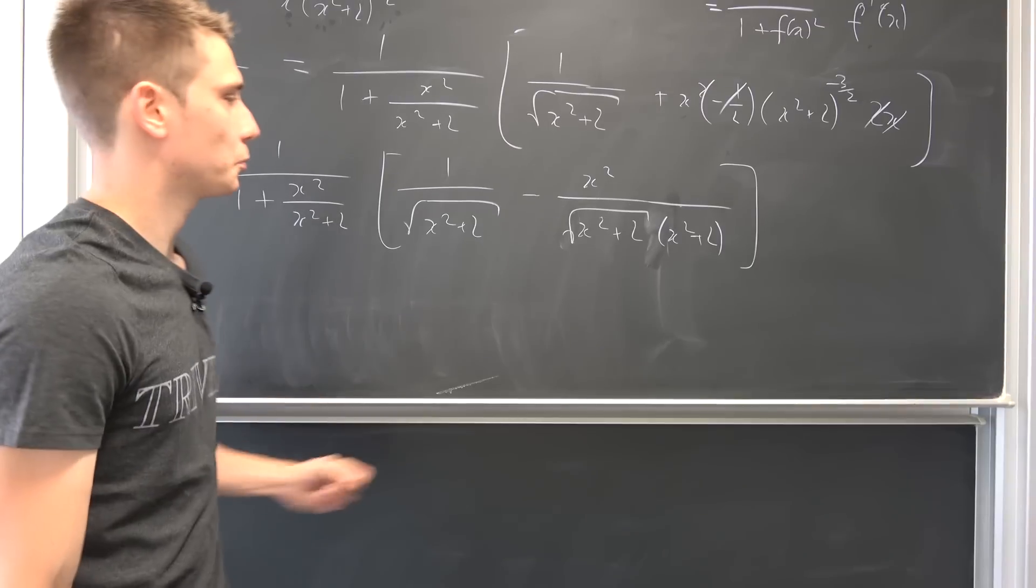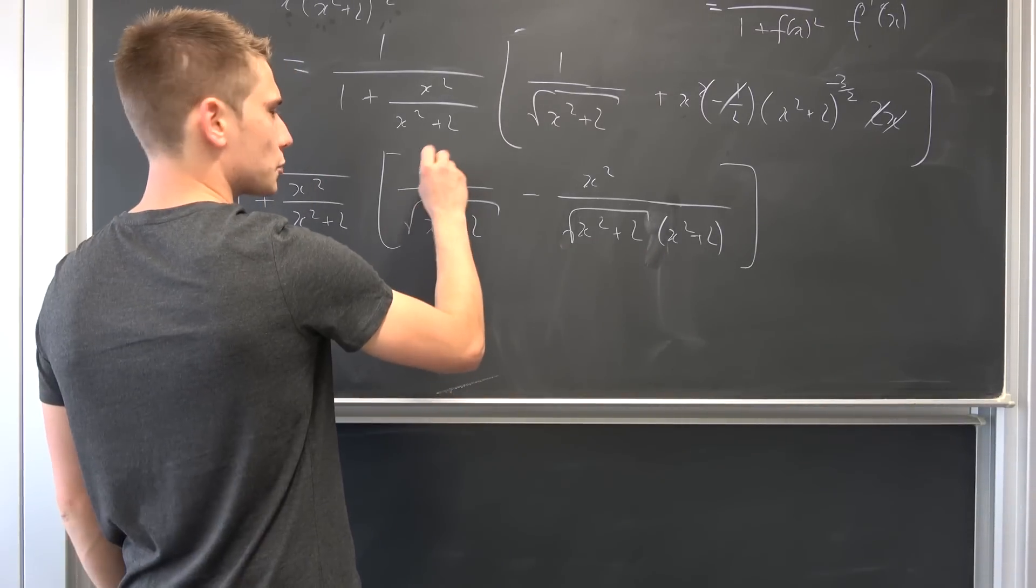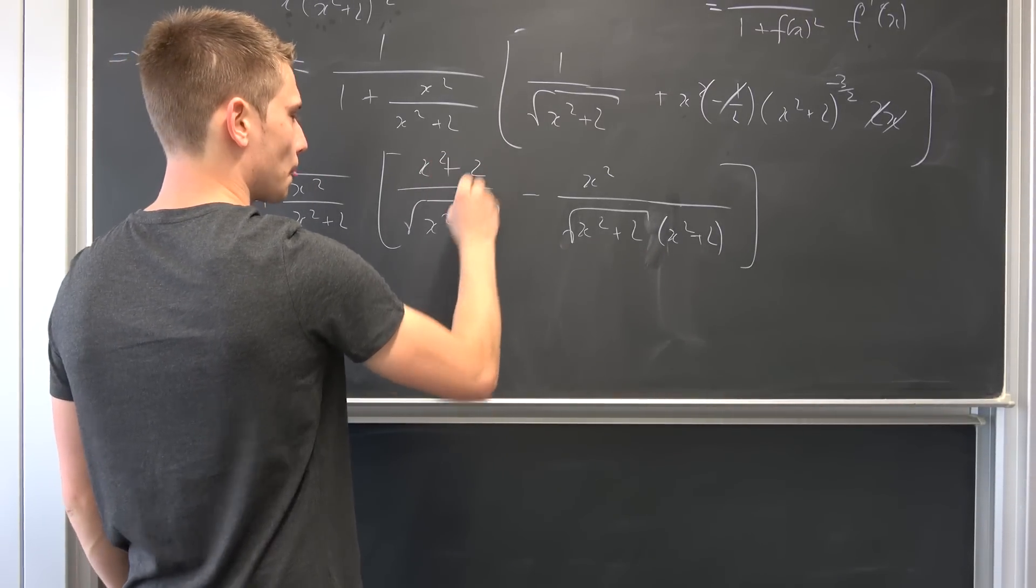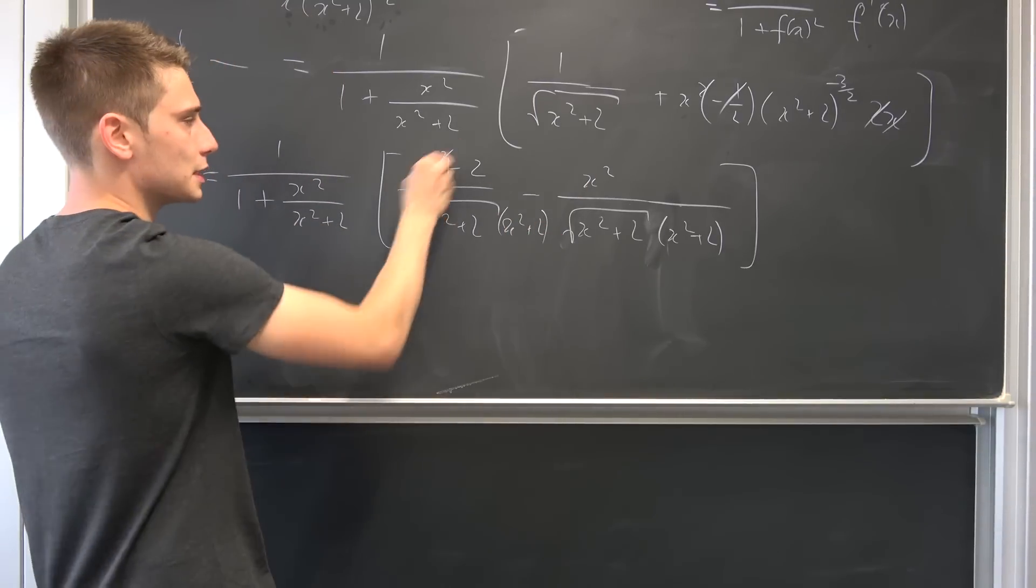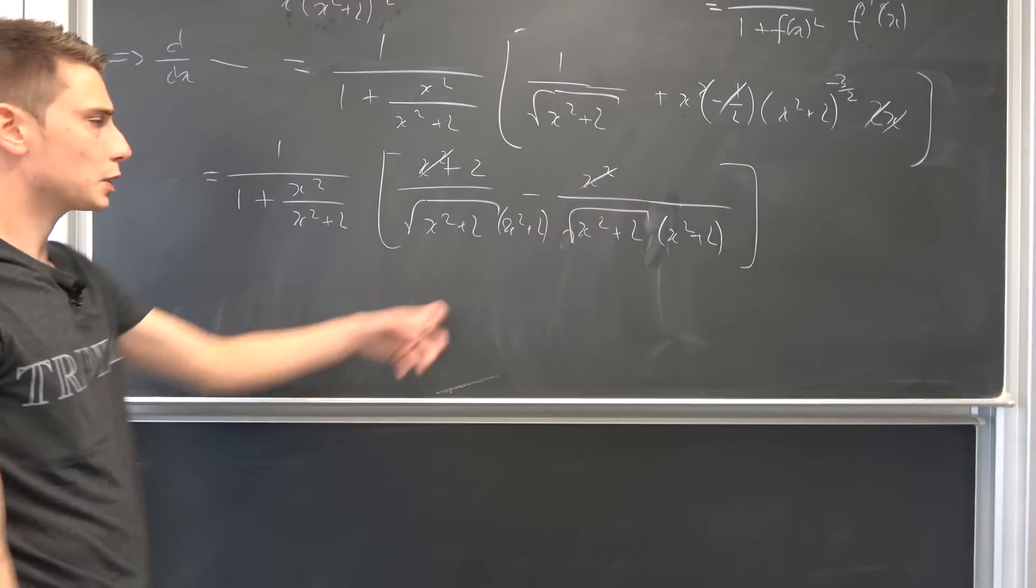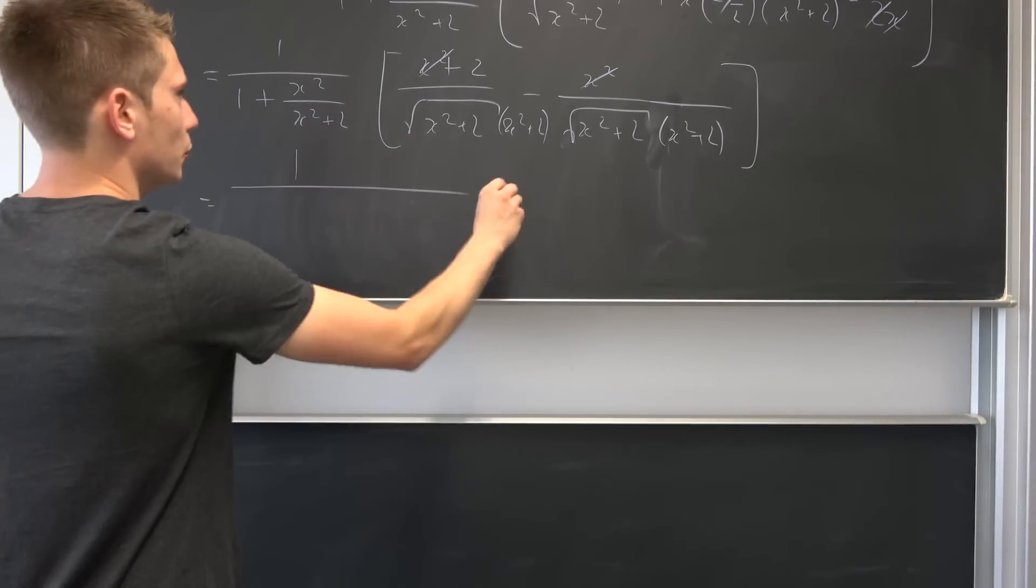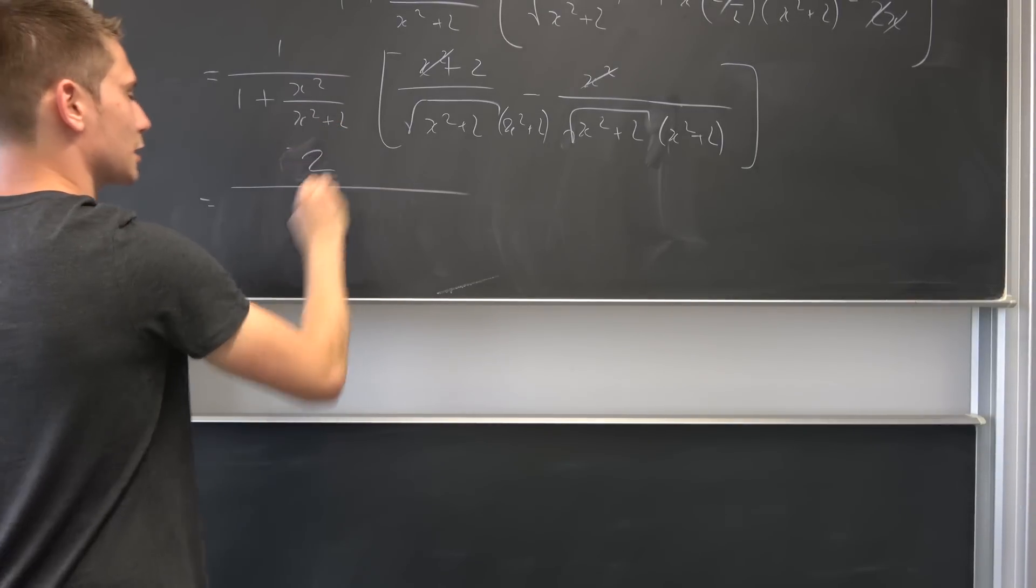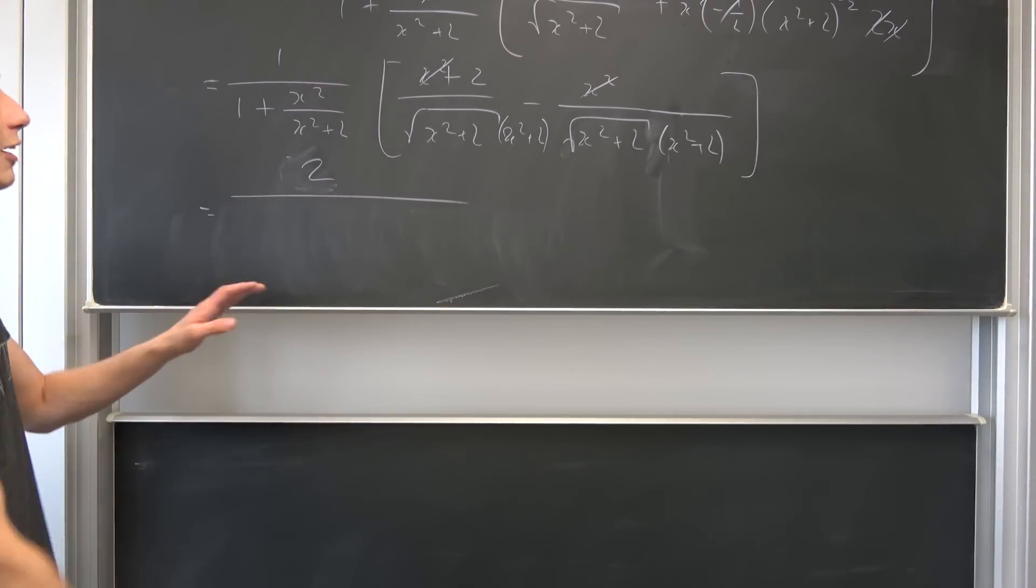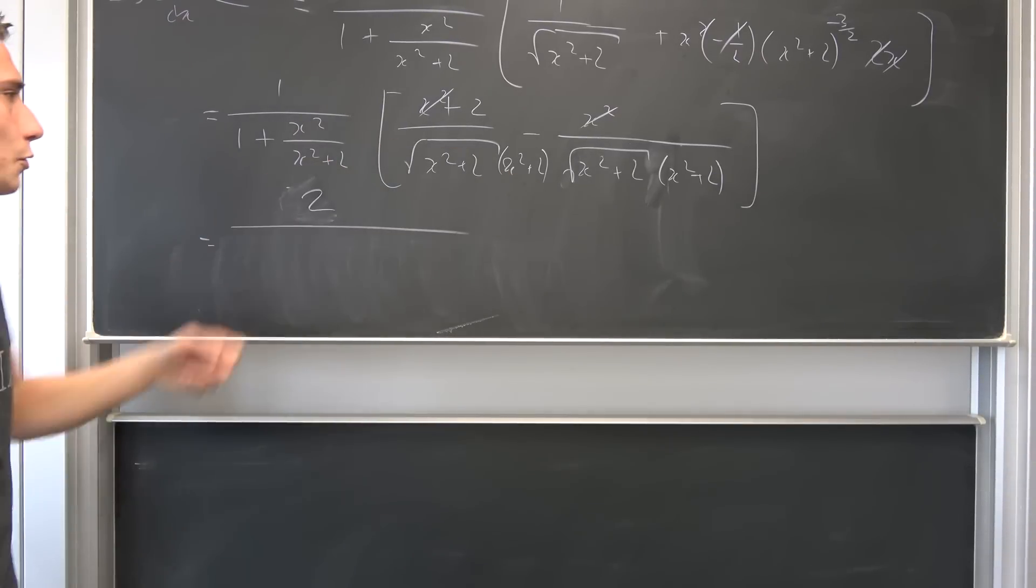So we end up with one over one plus x squared over x squared plus two, and also we have this one over square root x squared plus two, and we also have this chunk right here, so negative x squared over x squared plus two square root to the three over two power. And you see this is nothing but square root x squared plus two times x squared plus two, just using the exponent properties, the exponential properties.